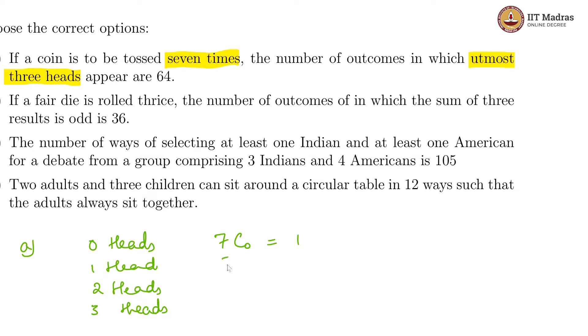And for one head, we choose one toss of the seven, which is seven. And for two heads, we choose two tosses of the seven, which is 21. And finally, three heads is three choices from seven, which is 35.